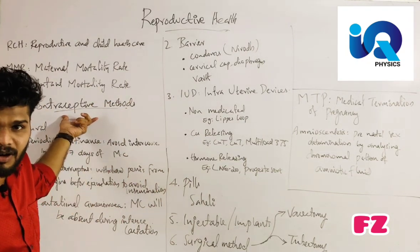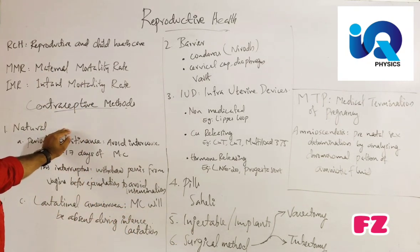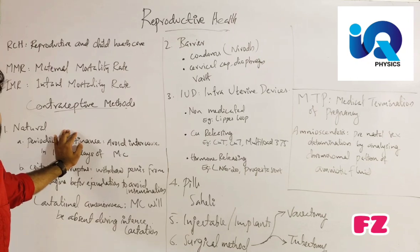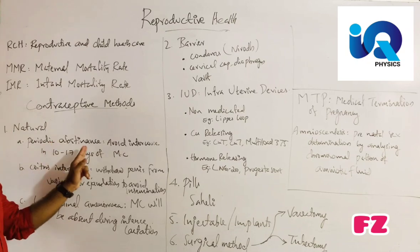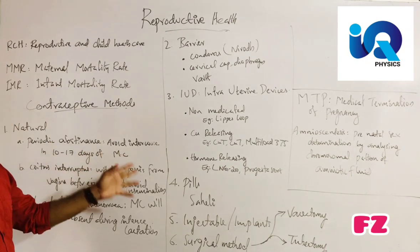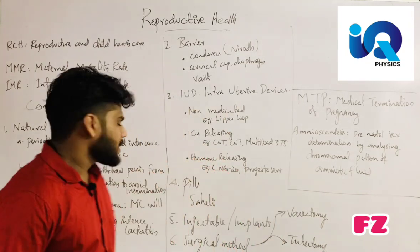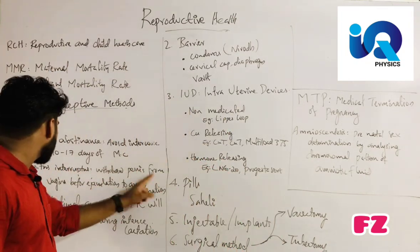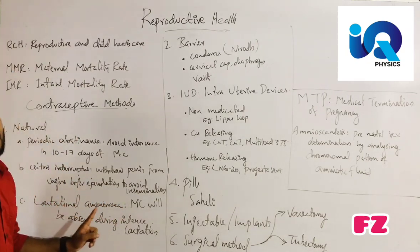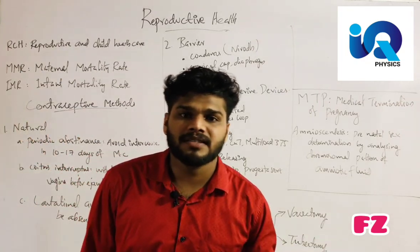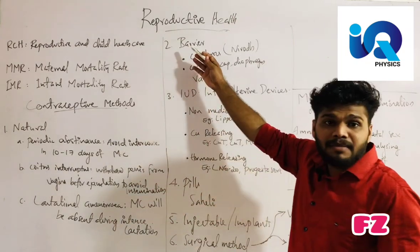Our first topic is contraceptive methods. The first type is the natural method. Natural methods include periodic abstinence — avoiding fertilization during days 10 to 17 of the menstrual cycle — coitus interruptus, withdrawing the penis from the vagina just before ejaculation, and lactational amenorrhea, where the menstrual cycle is absent during intense lactation.